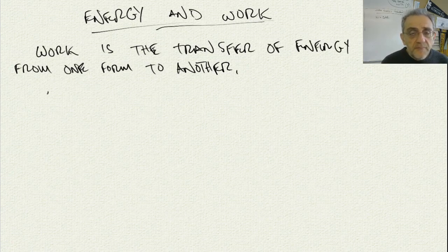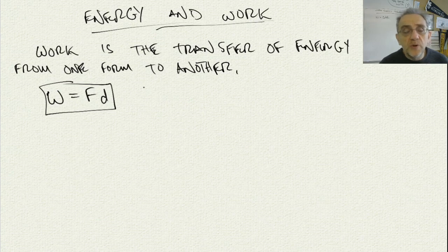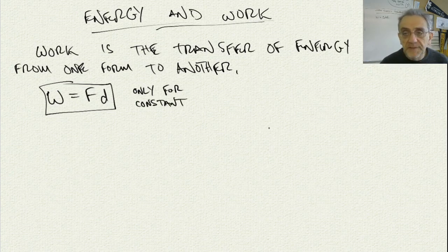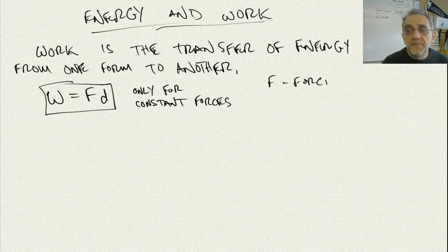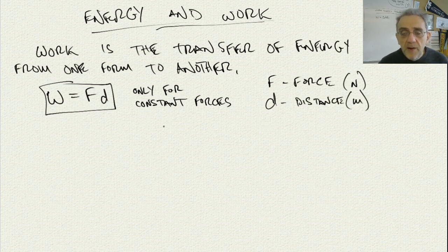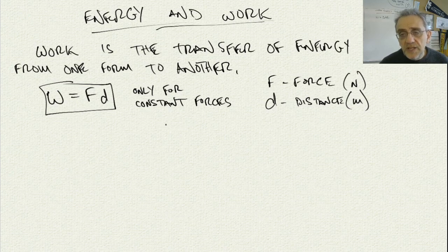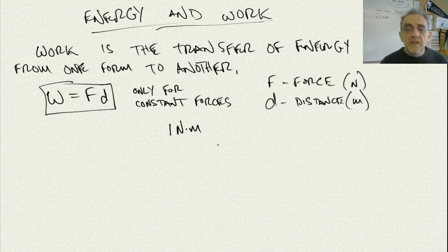The general equation for work is equal to force times distance. Now this equation only works for constant forces. So if I was to look at the units here, obviously F stands for force, which has a unit of newtons, and D is distance, which has a unit of meters. And when you multiply them together, the unit is one newton meter. Now we have a new name for this, and it's equal to one joule.